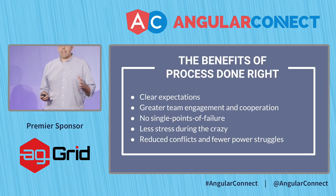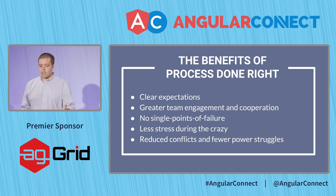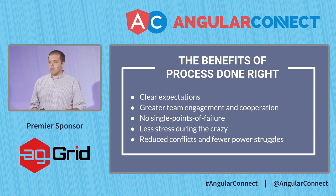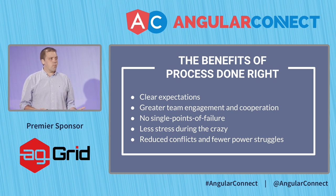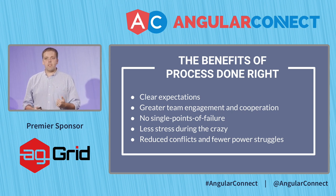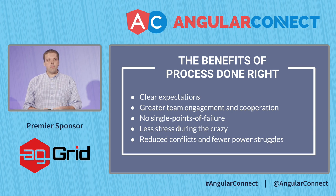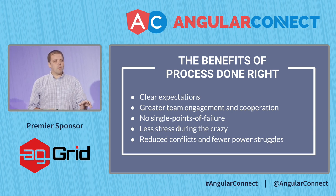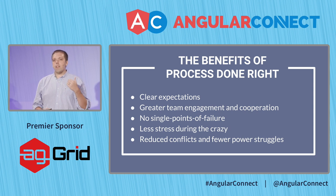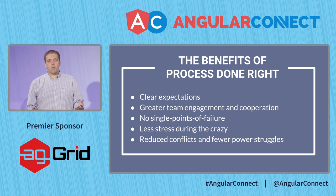If process is actually done correctly and conscientiously, you can get a lot of benefits. One of those is clear expectations: as a team member, you know what's expected of you to be successful, and what you can expect of the people around you. You have greater team engagement and cooperation, because when you know what you're supposed to be doing and how, you can hold other people accountable and they can hold you accountable as well.